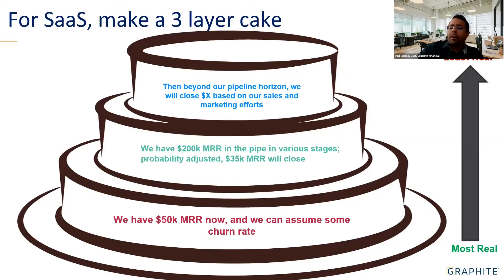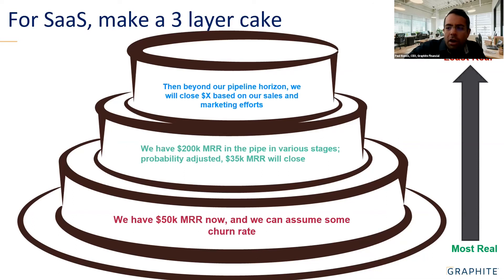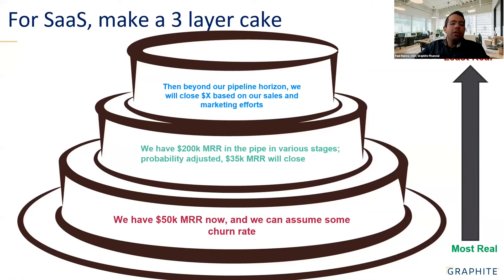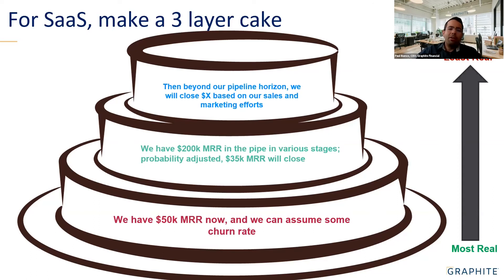For B2B or SaaS — where you have a sales team and contracts are meaty enough to look at on a per-name basis — I recommend starting at the bottom layer: what is your MRR now, assume a churn rate, then look at your actual pipeline. We have this much in the pipe, we think this much will close over this time horizon. Then you factor in salespeople, leads coming in, and make calculations for the future. The real clients are the most real; the projected stuff at the top is the least certain.